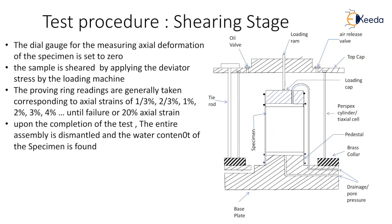Once the test procedure is completed, the stress-strain curve can be plotted for the given specimen, where values of stress are obtained from the deviator pressure applied by the loading machine and values of strain are obtained from the readings of the proving ring. This test is repeated at least twice for different specimens of the same soil using different cell pressures, so that different values of deviator stress at failure are obtained. Using these values, the failure envelope can be obtained and more Mohr's circles can also be drawn. Thank you.